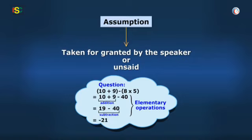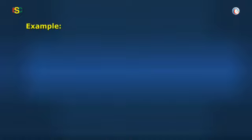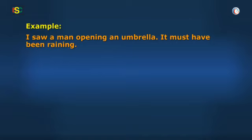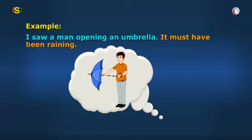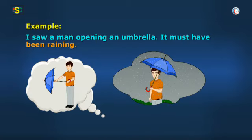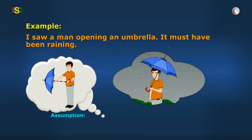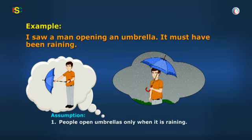Okay. Let's take another example. I saw a man opening an umbrella — it must have been raining. The speaker concludes on the basis of what he saw that it must have been raining. Obviously, the speaker thinks that people open umbrellas only when it is raining.